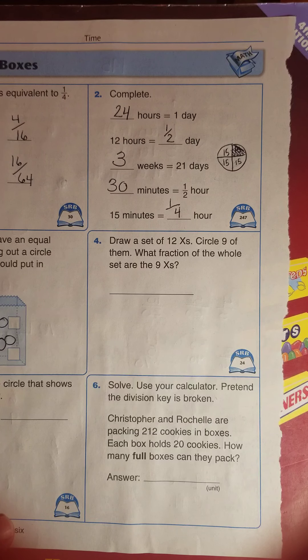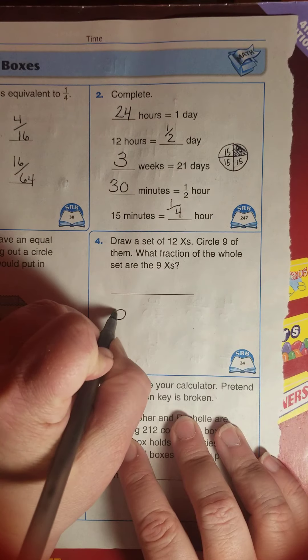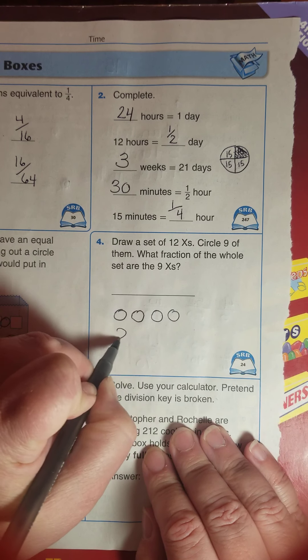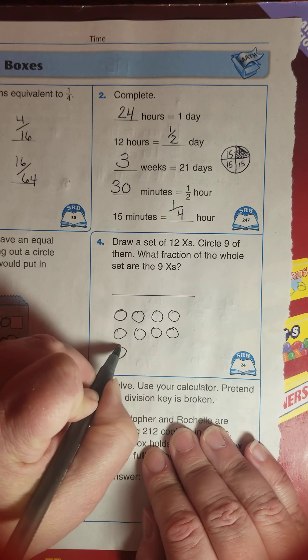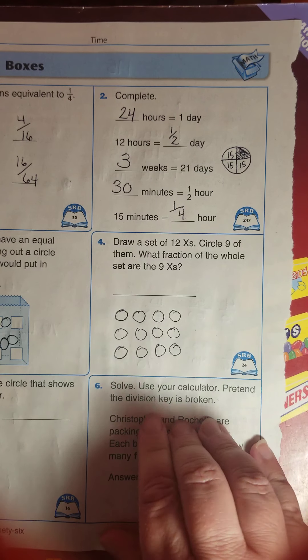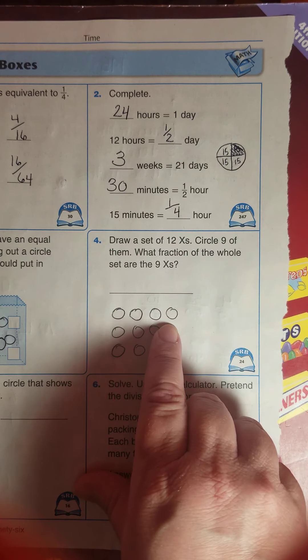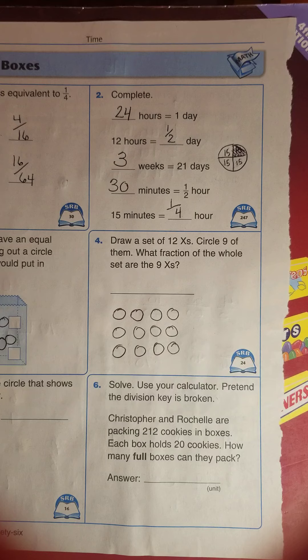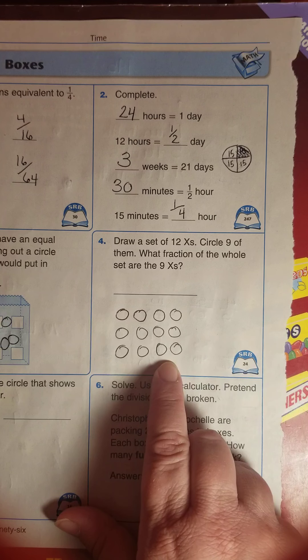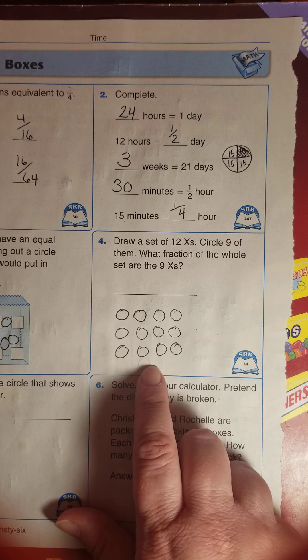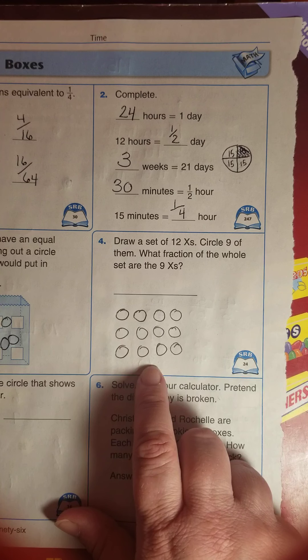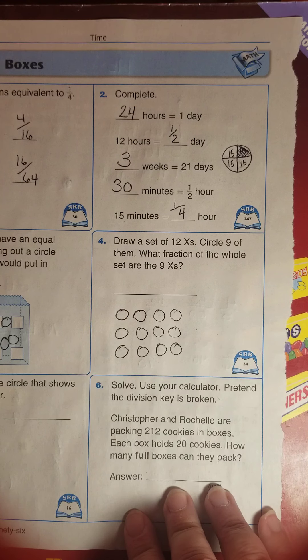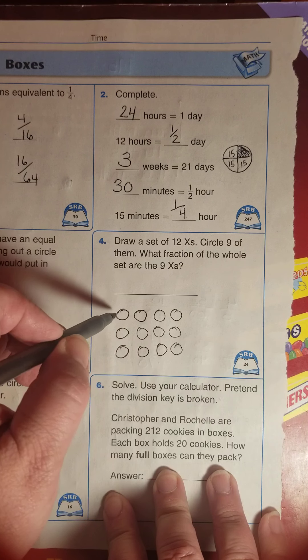Draw a set of twelve X's. Circle nine of them. What fraction of the whole set are nine X's? I'm going to do an array. One, two, three, four, five, six, seven, eight, nine, ten, eleven, twelve. How did I know that would work out so nicely? Because I know that four threes makes twelve. I have an array of four times three. Those are my twelve. Oh, and I drew circles instead of X's, so I hope you'll forgive me.